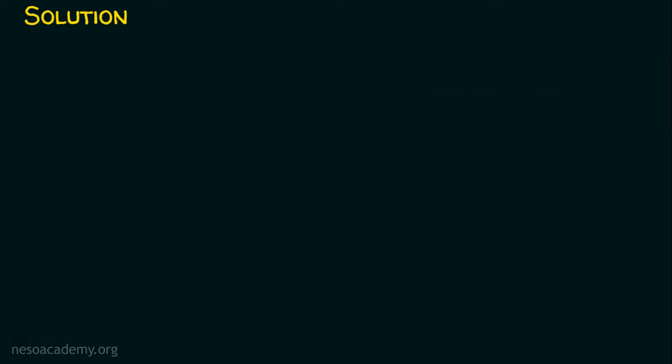We will start with the subnet mask given in the question. The initial or default subnet mask was 255.255.0.0 because it's a class B subnet mask, and this class B subnet mask is subnetted with a 6-bit subnet number. This 6-bit subnet number means the number of bits used for the network portion is 6. So we are going to reserve 6 ones in the network portion. Please note this is subnetting based on network requirement, not based on host requirement.